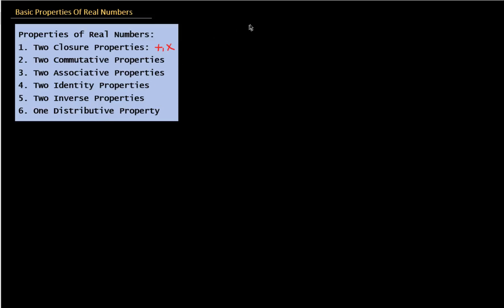So what are these properties? Let us assume that A and B are two real numbers, belonging to the set of real numbers. The closure property says that if we add these two numbers and get another number C, which is the sum of these two numbers, then if A and B are real numbers, their sum will also be a real number.